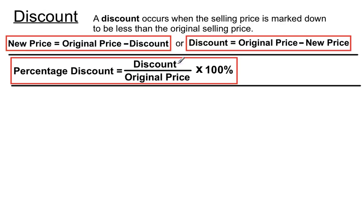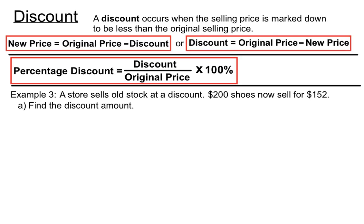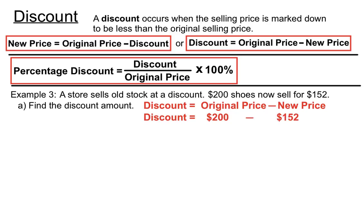To find the discount amount, take the original price and subtract the new price. For percentage discount, take the discounted dollar amount, make a fraction with the original selling price on the bottom, and multiply by a hundred. Example: shoes originally priced at $200 are now selling for $152. The discount amount is $200 minus $152 equals $48.